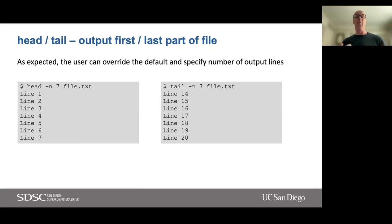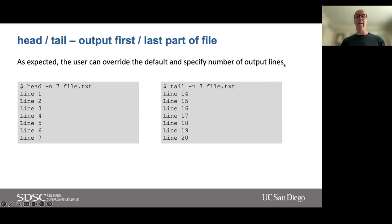All of these tools have multiple options. You can override the defaults and specify the number of output lines. For example, if I wanted to see just the first seven lines of a file, I could do `head -n 7 filename` and get lines one through seven. Or if I want to see the last seven lines, I could use `tail -n 7` and get lines 14 through 20. Pretty simple tool, but very useful.